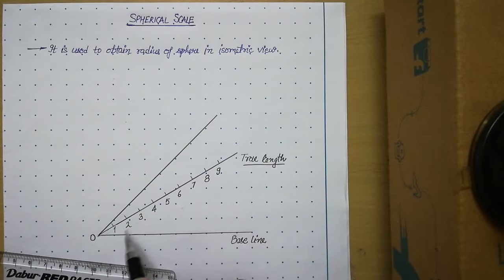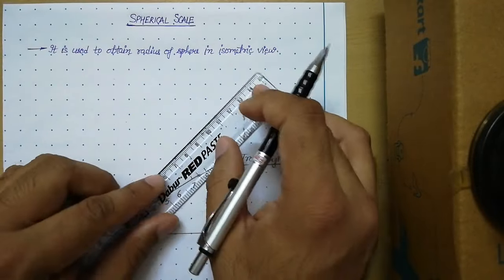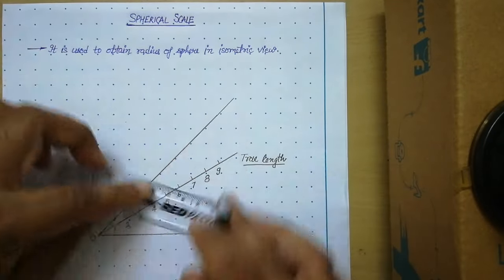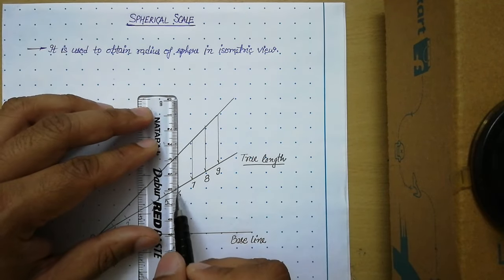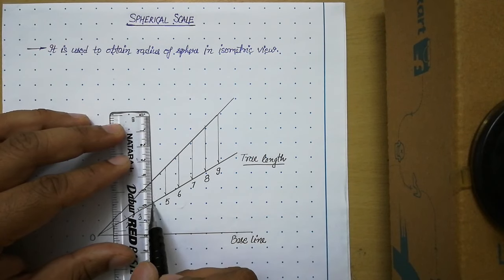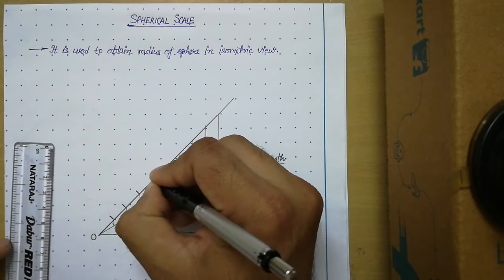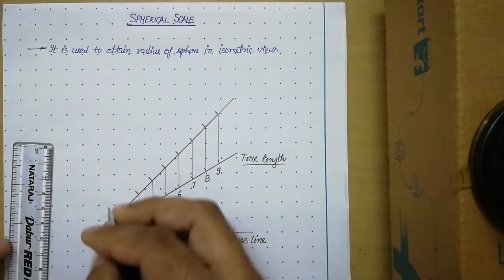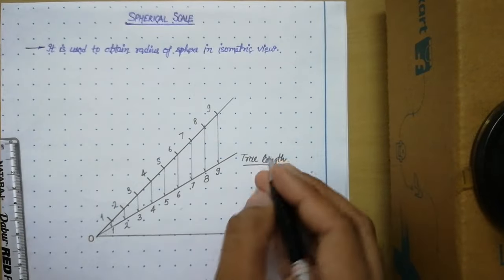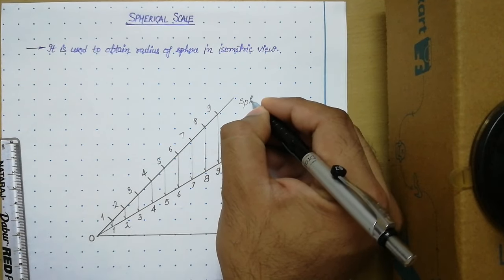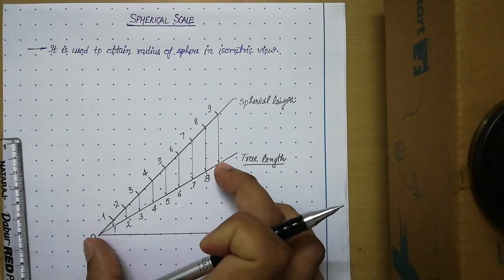In the isometric scale, true length was drawn on 45 degrees, but for the spherical scale you draw the true length on the 30 degree line. You mark those divisions — I have marked up to 9 centimeters — so we call this the true length. From these points, draw vertical lines upward onto the 45 degree line. Label these points on the 45 degree line as 1, 2, 3, up to 9. This length on the 45 degree line is called the spherical length.